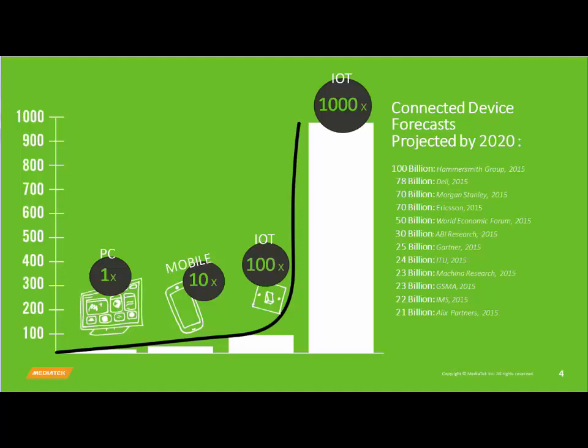As you are no doubt aware, and have probably seen countless times before, the projected forecasts for IoT engagement over the next few years are staggering. I've got a slide here which shows the difference between the projected number of devices in 2020. Hammersmith Group is forecasting 100 billion devices; Alex Partners, 21 billion. There is a 79 billion difference between those two numbers, but 21 billion is a big number anyway. So all we know is that it's going to be huge, very pervasive, and most likely your daily lives will be impacted by IoT devices going forward.